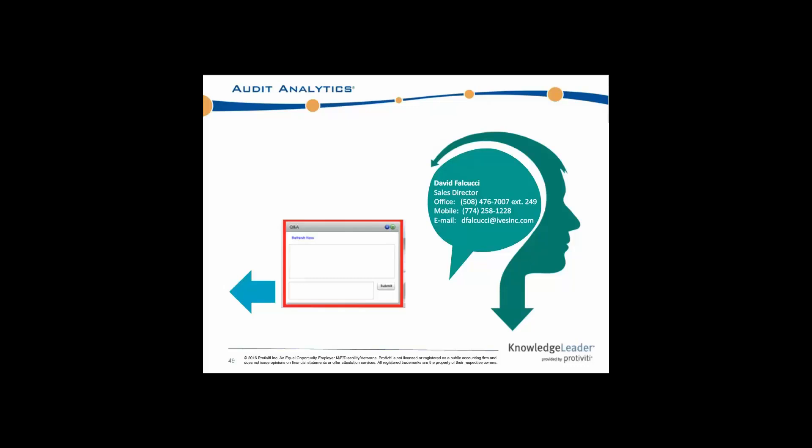We've received a number of questions, so we won't have a shortage. One asks: what is driving the increase in non-accelerated filers not disclosing the frameworks used for management assessment? It could be that they're trying to fly under the radar — maybe thinking that if they don't disclose, it gives them another year before they have to implement the 2013 framework. But as you can see with the number of SEC comment letters, it seems like the SEC is on to them. I would expect the number of undisclosed to drop next year based on the comment letters issued so far.